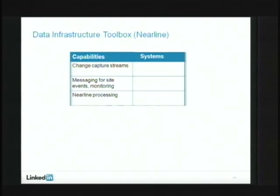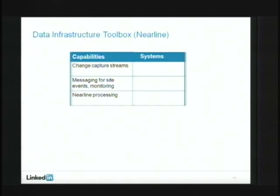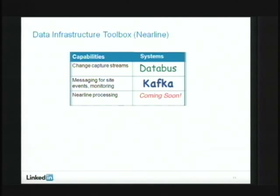Moving into nearline: you have change capture streams from primary data stores, but also reads — someone viewing a profile — as well as ad impressions and ad clicks that generate a lot of data and need to be tracked and analyzed. There's also nearline processing: taking all these streams, aggregating and massaging them to figure out what derived data stores look like, as close to real-time as possible. We have DataBus and Kafka as our primary change capture and messaging systems.